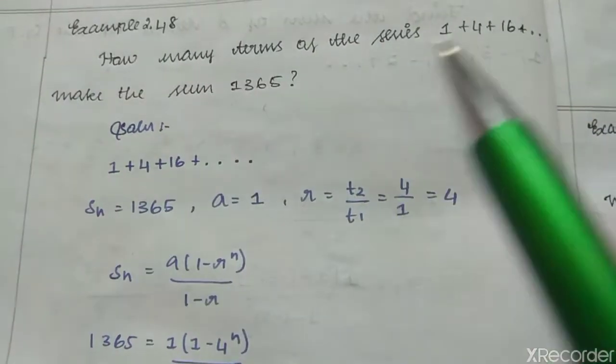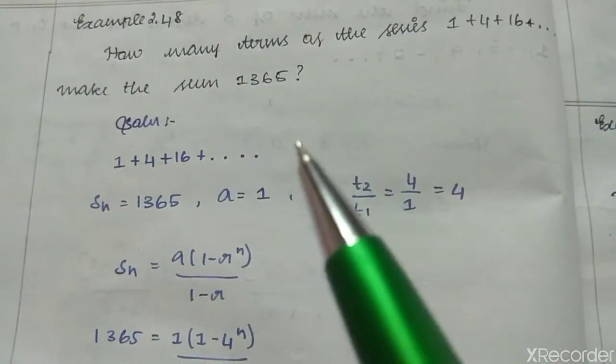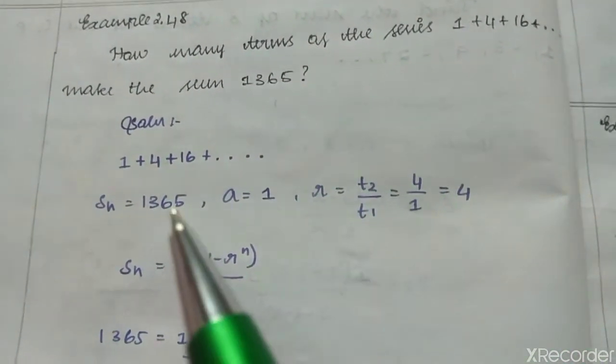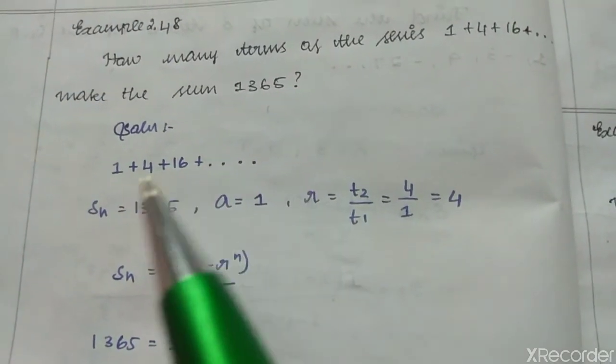Given series 1 plus 4 plus 16 and so on, sum is 1365. First term a is equal to 1.